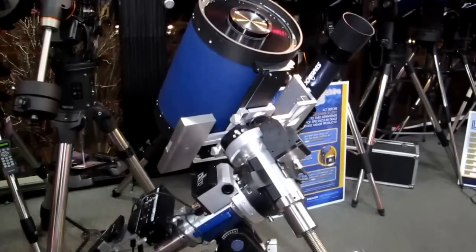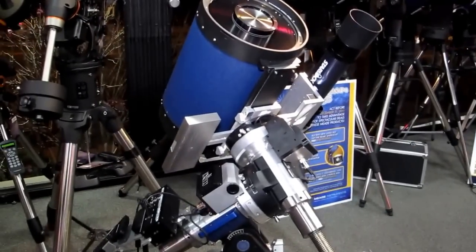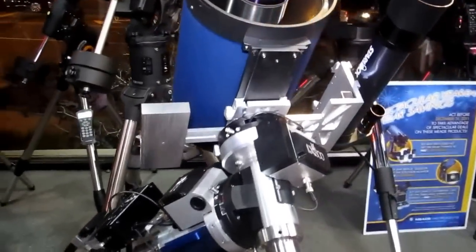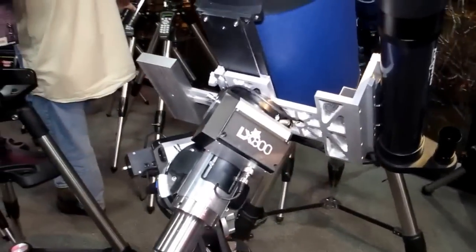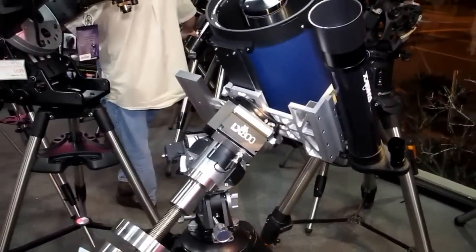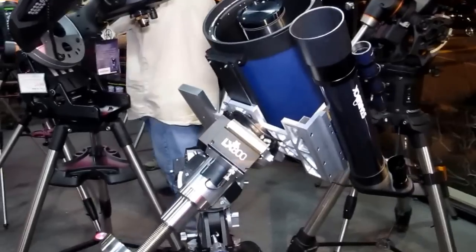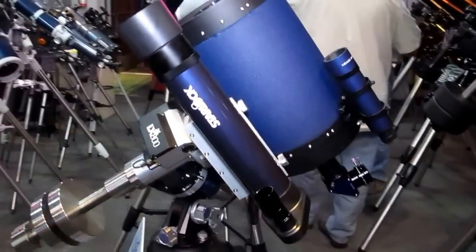So this is the LX800, the top of the line for Meade German Equatorial Mounts. It's the only mount on the marketplace with integrated self-guiding, and that's all automated. The two little scopes you see off to the side—one's a wide-field camera, one's a narrow-field camera—that's the StarLock system.